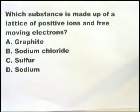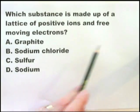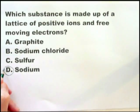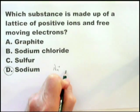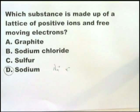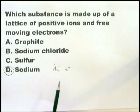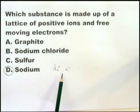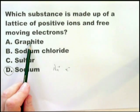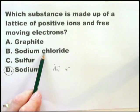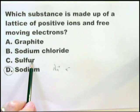This is another question where you should immediately see 'positive ions and free-moving electrons.' The only one it could possibly be is sodium, because these would be the sodium ions with lots of free electrons. You do have a lattice of positive sodium ions and free-moving electrons, which give sodium the opportunity to conduct both electricity and heat. In the case of graphite, the electrons are free-moving but there are no positive ions present. In the case of sodium chloride and sulfur, there are no free-moving electrons.